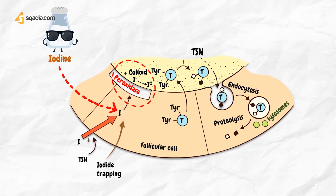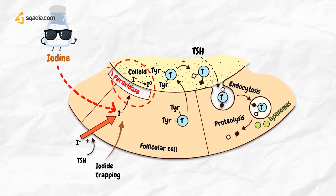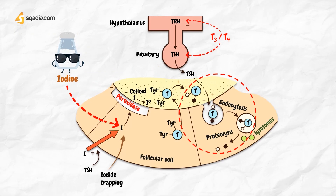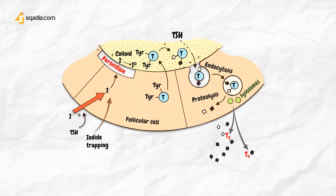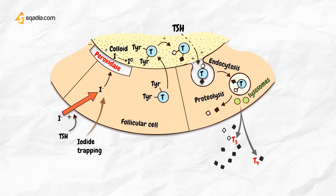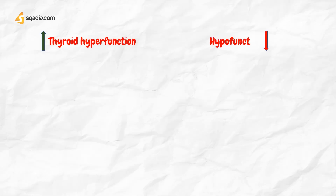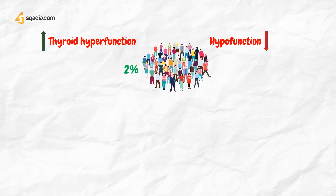The thyroglobulin containing these iodothyronines is stored in the follicles as colloid. When the circulating levels of T3 and T4 fall, thyrotrophin is released from the anterior pituitary gland and stimulates the transport of colloid by endocytosis into the follicular cells. The colloid droplets then fuse with lysosomes and protease enzymes degrade the thyroglobulin, releasing T3 and T4 into the circulation.